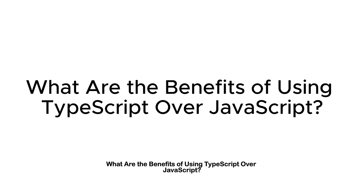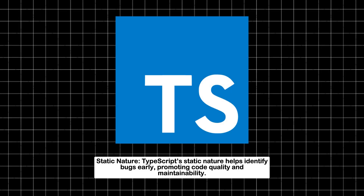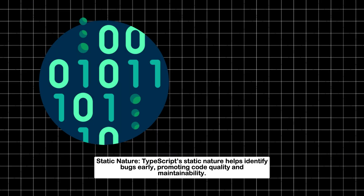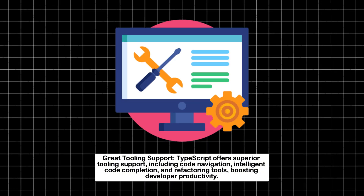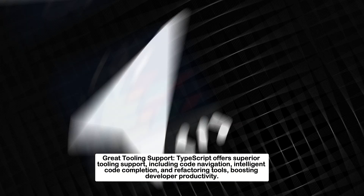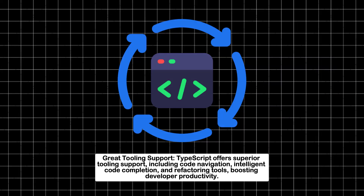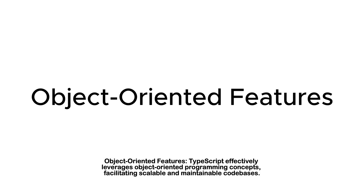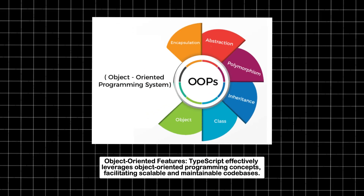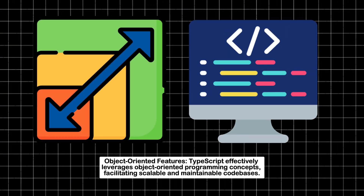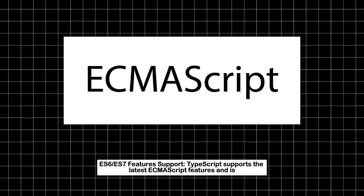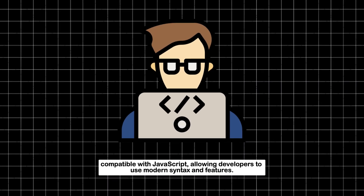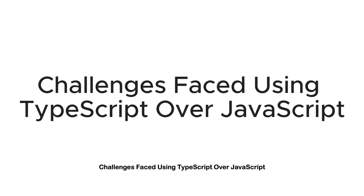Benefits of using TypeScript over JavaScript: Static nature helps identify bugs early, promoting code quality and maintainability. Great tooling support includes code navigation, intelligent code completion, and refactoring tools, boosting developer productivity. Object-oriented features allow TypeScript to leverage OOP concepts, facilitating scalable and maintainable codebases. TypeScript also supports the latest ECMAScript features and is compatible with JavaScript, allowing developers to use modern syntax and features.